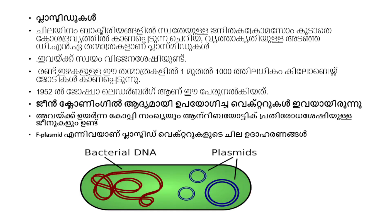We are going to talk about plasmids and bacteriophages. What are plasmids? If we have bacterial chromosomes, we are going to talk about plasmids. Plasmids are circular forms of DNA. They have self-replicating properties.